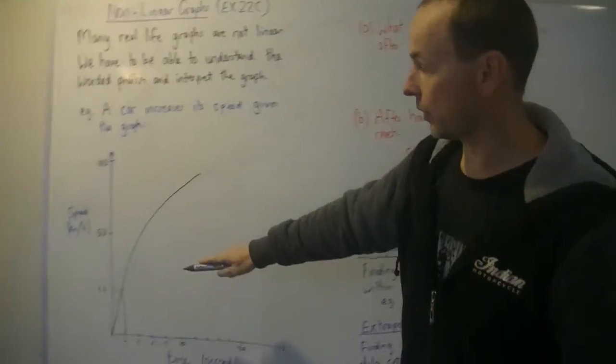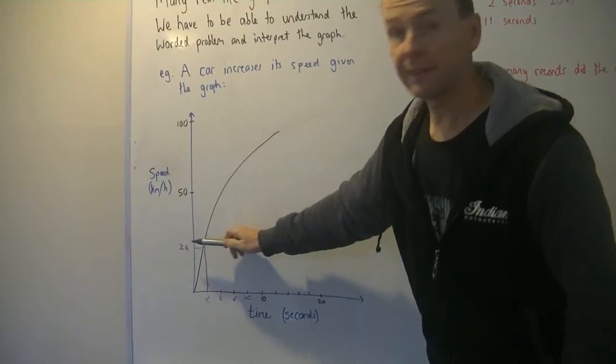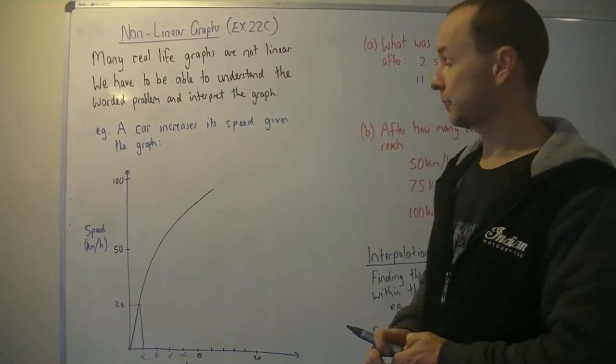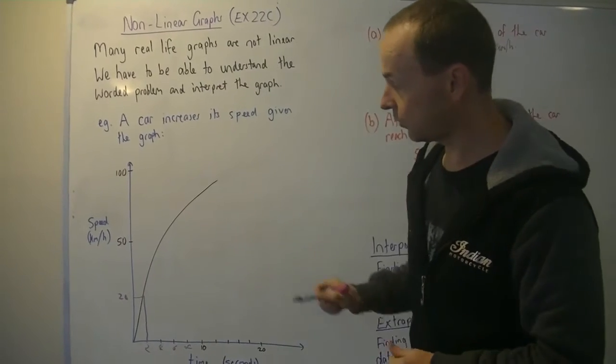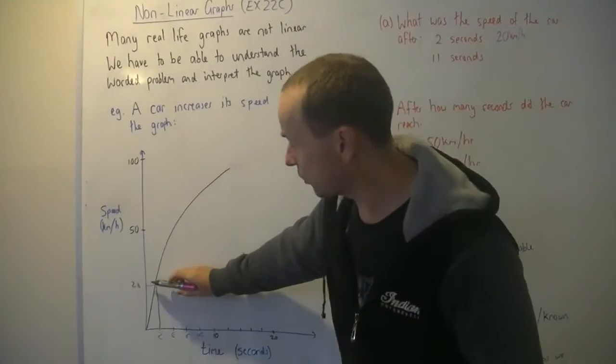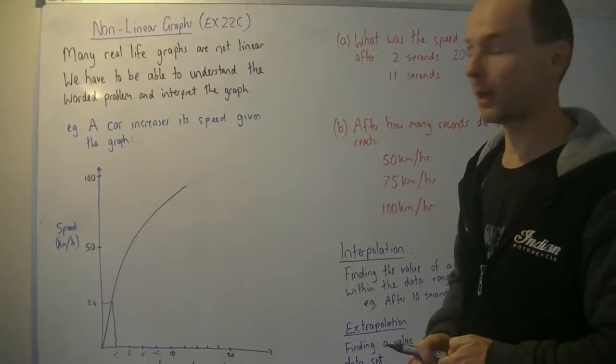Now of course when you use a graph like this and you use a ruler, this is not completely accurate. So you have to try as best you can. You've got to be as accurate as you can and we'll allow in a test or a SAT, we'll allow a range. So if that's 20 and the answer is really 22, that would probably be okay.